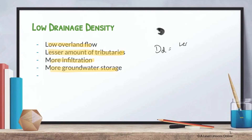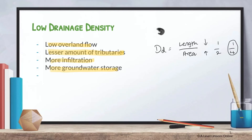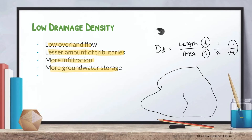For a lower drainage density, there has to be a smaller length and a larger area. For example, if the fraction is one over two, it gives 0.5 — but one over four gives 0.25, and 0.5 over four is even smaller. So shorter length and greater area produce a lower drainage density. It would look like a huge basin with barely any tributaries at all, resulting in an extremely low drainage density.